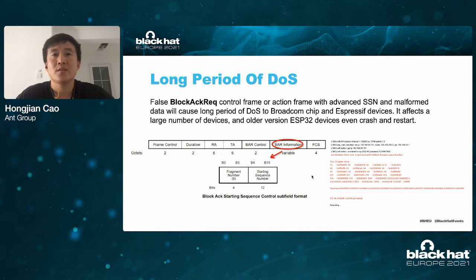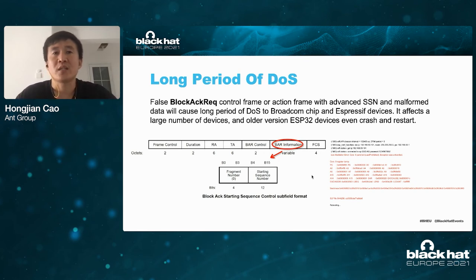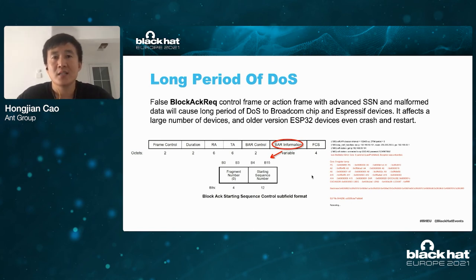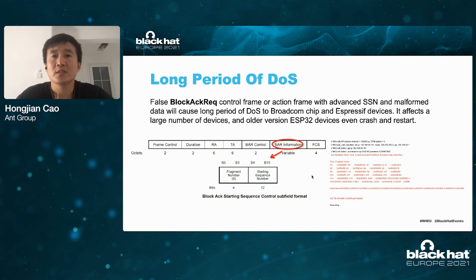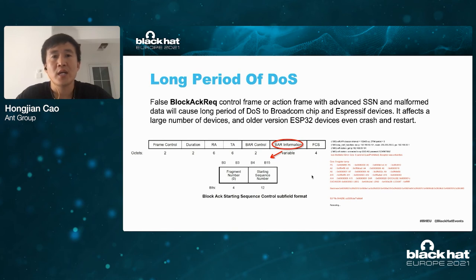The block ACK request long-period DOS affects a large number of Cypress and Broadcom Wi-Fi chip devices. An attacker can attack the device by sending a block ACK request packet with an advanced starting sequence number and malformed data. Once the device is attacked, its network connection will be disconnected for a period of time. Older version ESP32 devices even crashed and restarted automatically.